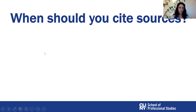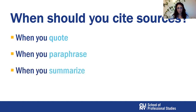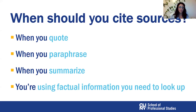There are four situations where you need to cite sources in your paper: when you quote, when you paraphrase, when you summarize, and when you use factual information that is not common knowledge. We're going to go through each one of these situations in more detail and talk about how to cite them.